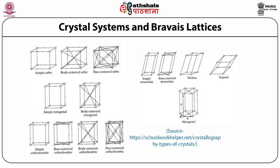The different crystal systems and Bravais lattices. In crystallography, the terms crystal system, crystal family, and lattice system each refer to one of several classes of space groups, lattices, point groups, or crystals. In three-dimensional space, there are 14 Bravais lattices. These are obtained by combining one of the crystal families with one of the centering types. The centering types identify the locations of the lattice points in the unit cell.